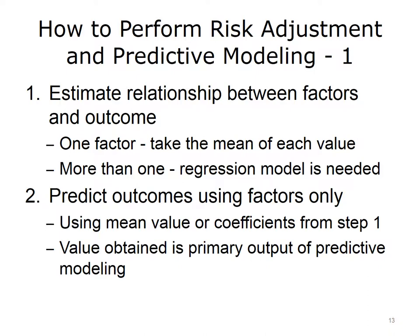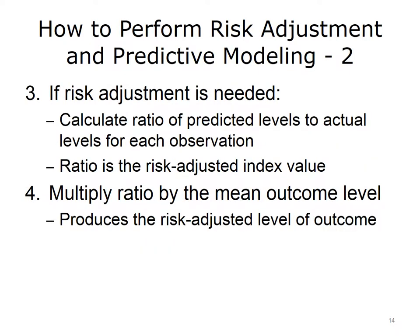Step 2: Predict the outcomes for each observation. This could be based on the mean value or the coefficients from the regression model in Step 1. Step 3: If risk adjustment is needed for a group of observations, such as a clinic, then for each group calculate the ratio of the mean predicted levels from Step 2 to the mean actual levels. That ratio is the risk-adjusted index value for the group's outcome. Step 4: Multiply the ratio by the mean outcome level. This produces the risk-adjusted level of the outcome for the group.